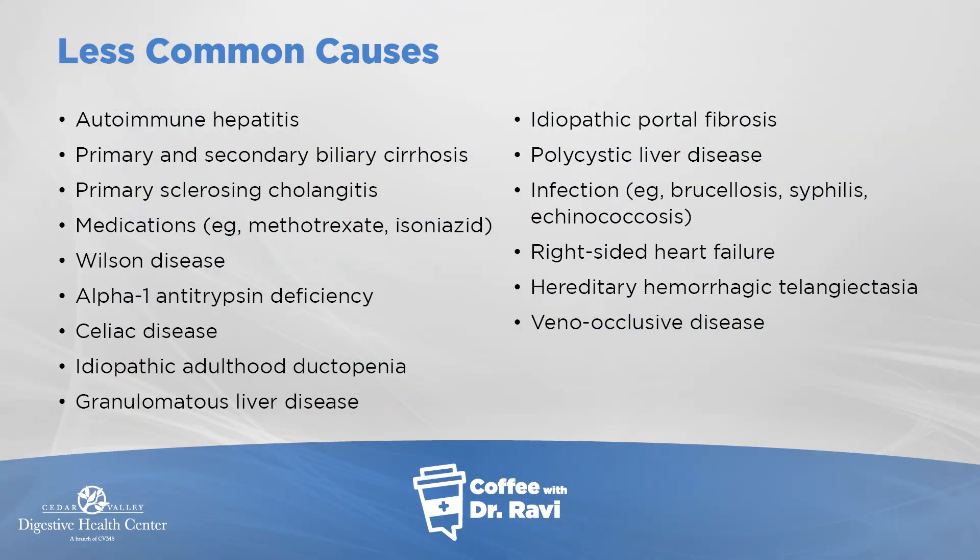Very rarely, liver problems can be associated with celiac disease. Liver problems can also be associated with the immune system attacking the liver and causing scar tissue. Sometimes right heart failure can cause liver problems — if the heart fails, there's a backup of blood that can scar the liver. And sometimes there can be cysts in the liver, what we call polycystic disease of the liver, where there are so many small bubble-like cysts that the liver can't function. So all of these are causes of cirrhosis.